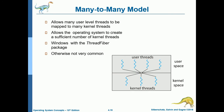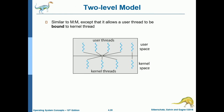The many-to-many model allows many user-level threads to be mapped to many kernel threads, allowing the operating system to create a sufficient number of kernel threads. Windows also uses this model specifically with the thread fiber package, though it is not very common. There is also the two-level model, which is similar to many-to-many except it also allows a user thread to be bound to a kernel thread — essentially a combination of many-to-many and one-to-one.